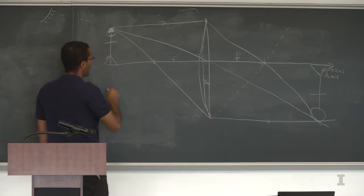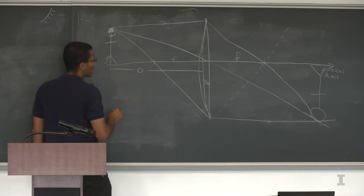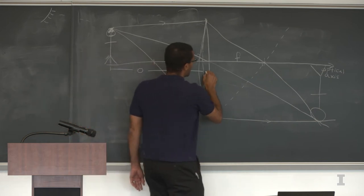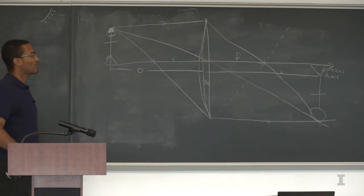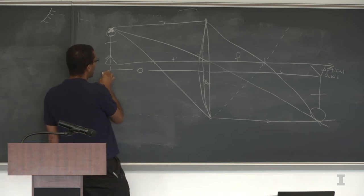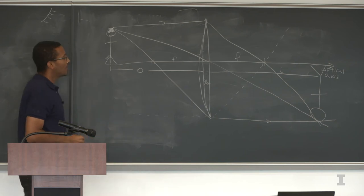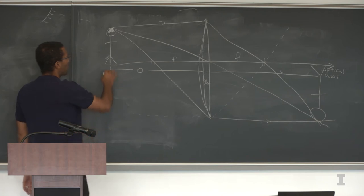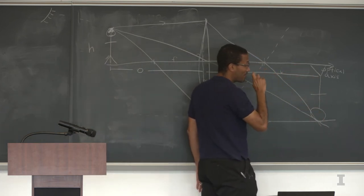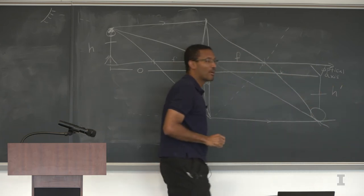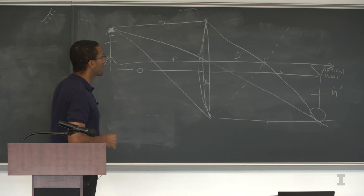There are two important geometrical quantities: the object distance O — the distance from the object to the lens — and the image distance I, the distance from the lens to where the image forms. The object has a height H; the image has a new height H prime. We use similar triangles to find the relationship. There's a right angle at the object, a right angle at the image, and vertical angles that are congruent — so triangles ABC and A'B'C are similar by angle-angle-angle.